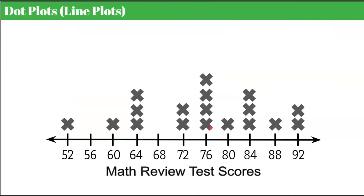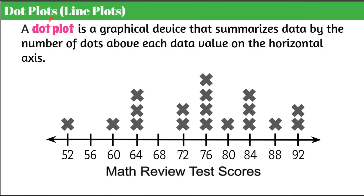Now let's talk about a dot plot, also referred to as a line plot. We have the same data set here showing math review test scores, and here we have X's instead of dots — just to show you the variety of things you could see. By definition, a dot plot or line plot is a graphical device that summarizes data by the number of dots above each data value on the horizontal axis.